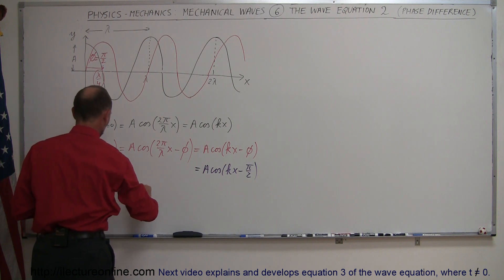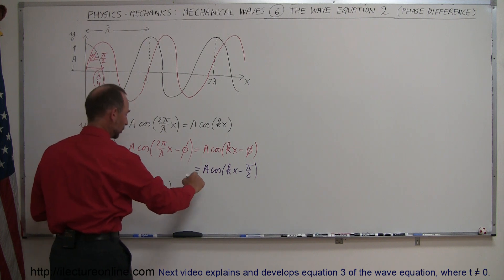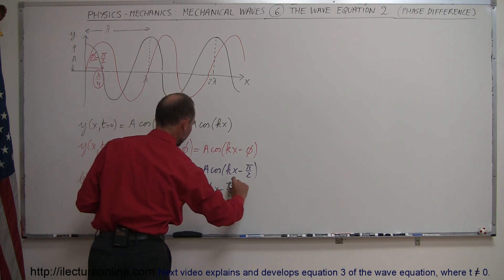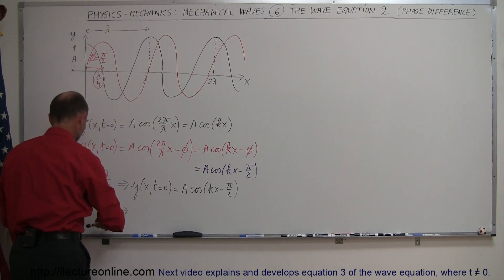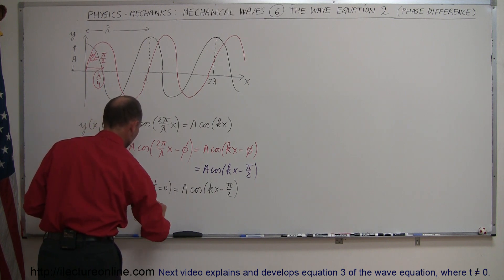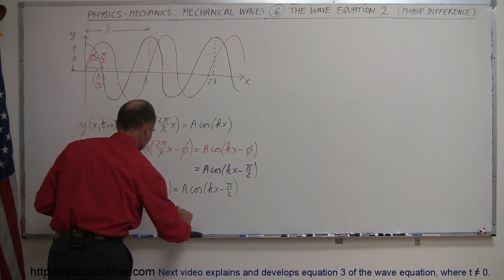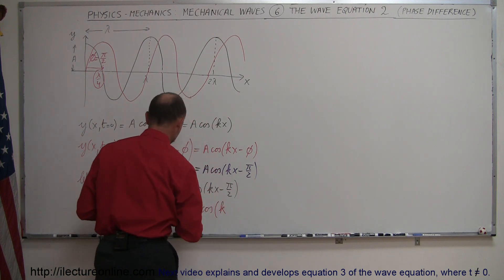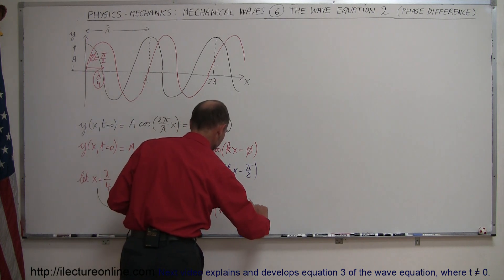So we have, as an example, y is a function of x and t equal to 0 is equal to a times a cosine of kx minus pi over 2. Now let's plug in the value for x right here. So now let's use the color again. So we have y when x is equal to lambda over 4. So we moved the wave over a quarter of a wavelength. t equal to 0. And we get a times a cosine of k times x. Now x is lambda over 4. Lambda over 4 minus pi over 2.